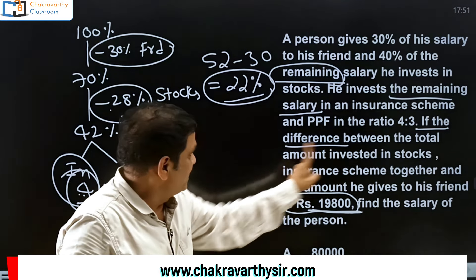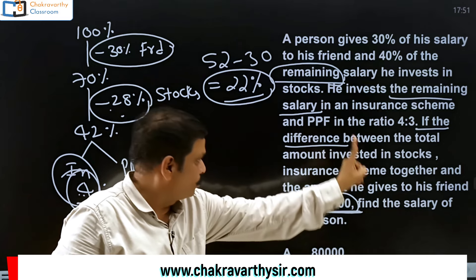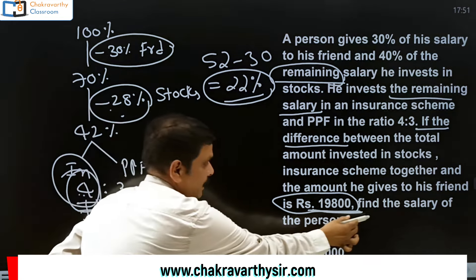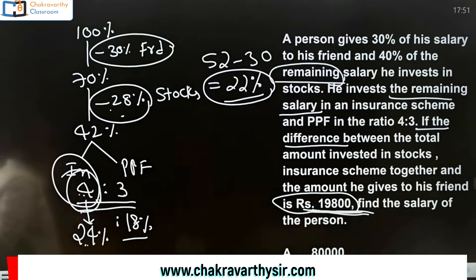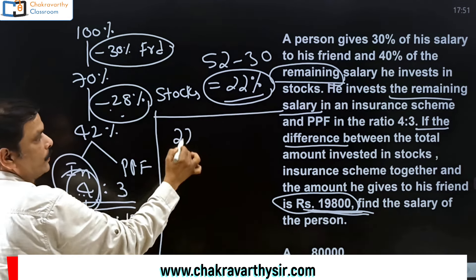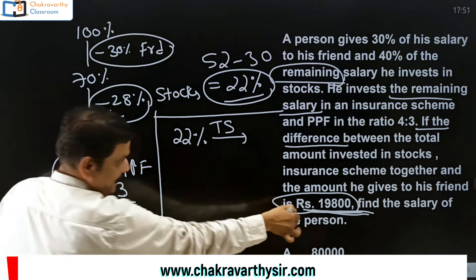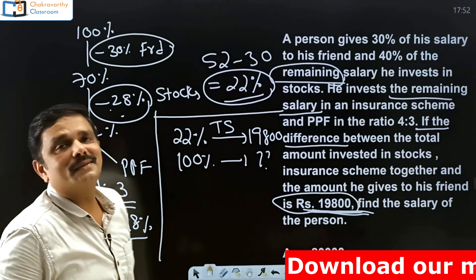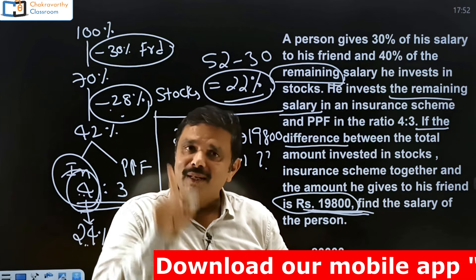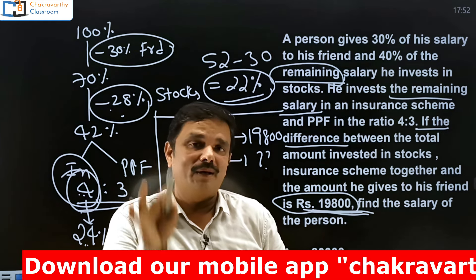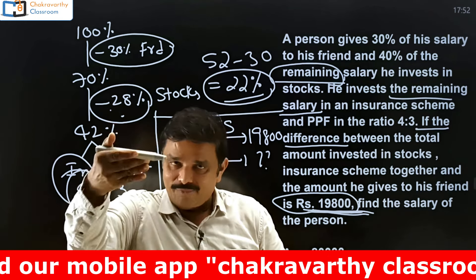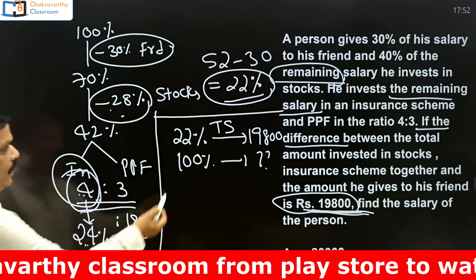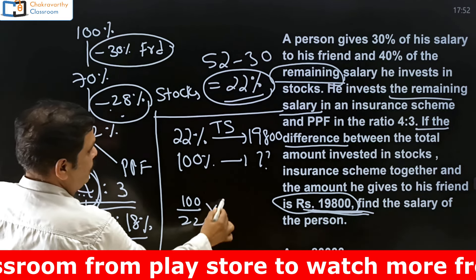22% is the difference between the total amount invested in stocks and insurance schemes together and the amount given to his friend. But actually in the problem, they have given this as 19,800. So the final step in the unitary method is: 22% of the total salary is 19,800. Then 100% of the salary is how much? That's it — this is what we have been doing in percentages using the unitary method.